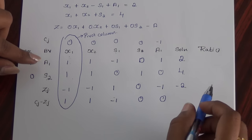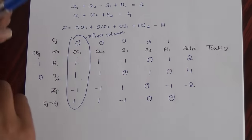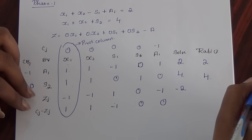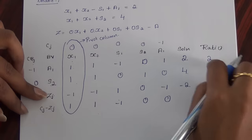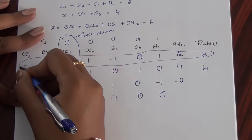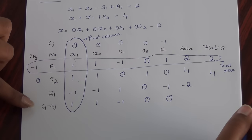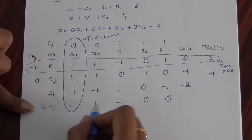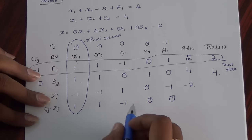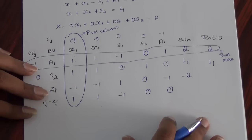For selecting the pivot row, I calculate the ratio: solution divided by the pivot column value. The first ratio is 2 by 1 equals 2, and the second is 4 by 1 equals 4. The pivot row is selected by the least positive value, which is 2 — so this is my pivot row. I continue this tabular column until all cj minus zj values are 0 or negative. Since I still have two positive values, I proceed with the second tabular column.